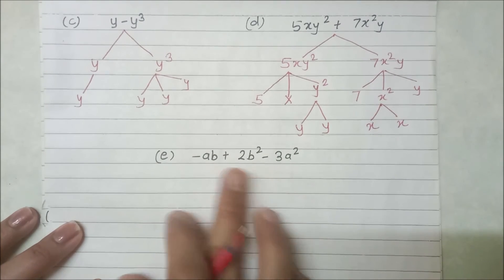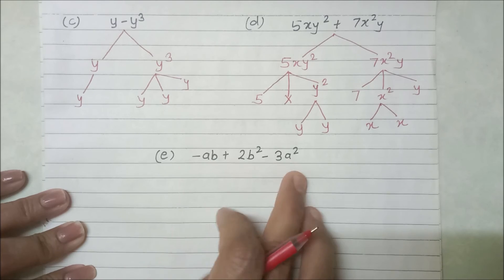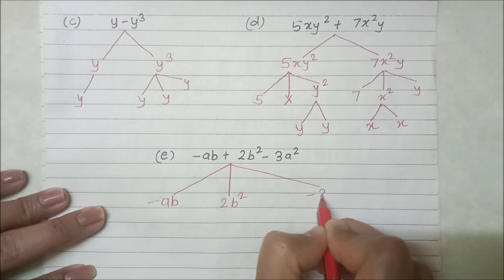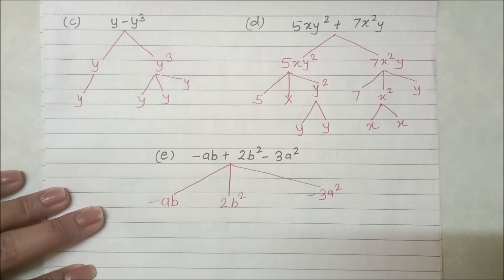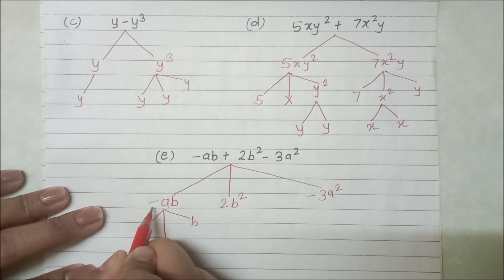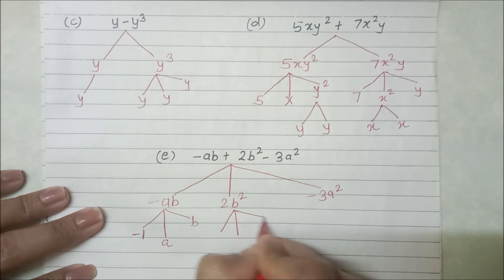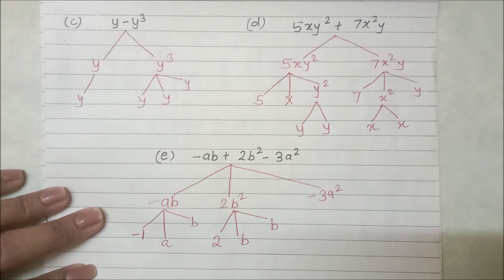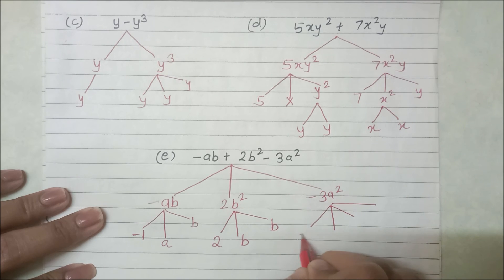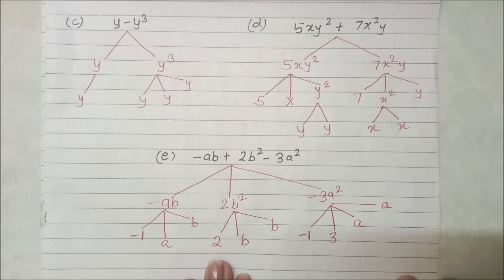The next expression has two operations, giving three terms: minus ab, 2b square, and minus 3a square. For minus ab: factors are minus 1, a, and b. For 2b square: factors are 2, b, and b (since b square is b into b). For minus 3a square: factors are minus 1, 3, a, and a (since a square is a into a).